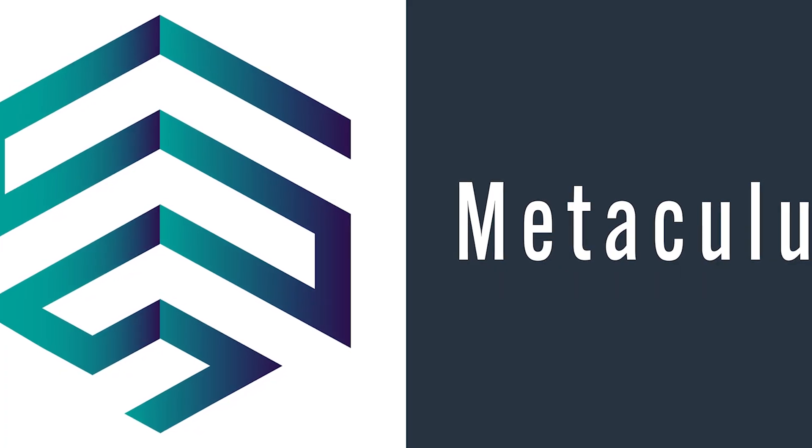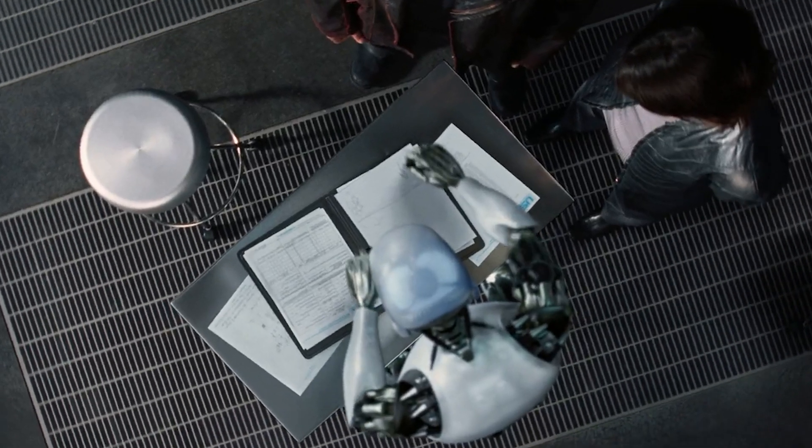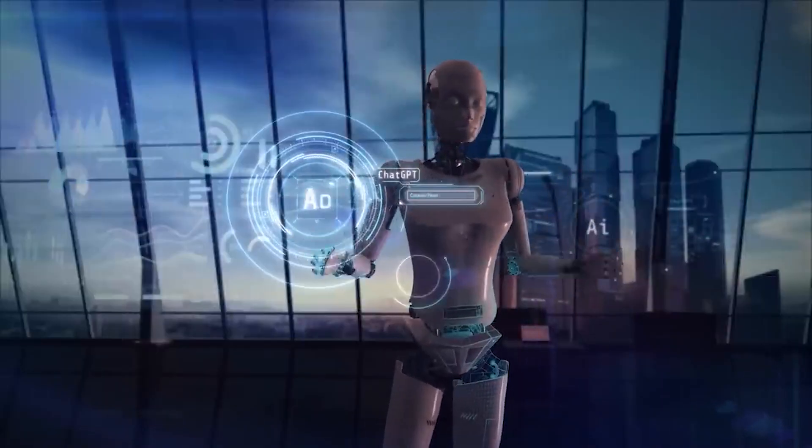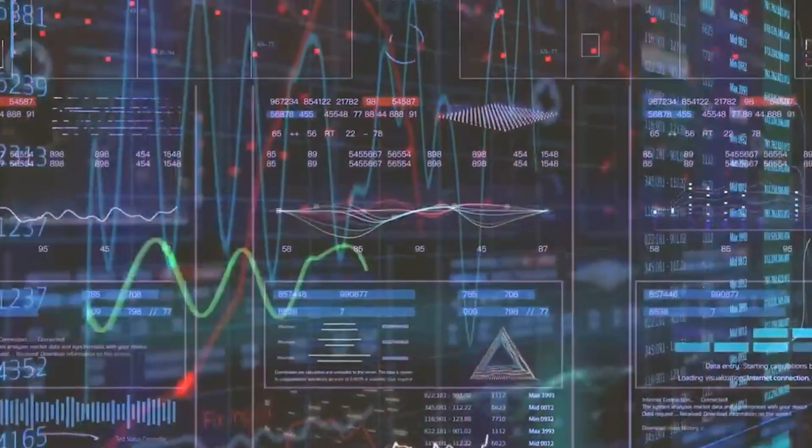According to predictions on a platform called Metaculus, AGI might be less than 10 years away. AI is different from human intelligence because it can grow very quickly once it reaches our level of smartness. Bostrom suggests that AI's real power is in being able to make itself even smarter, which could lead to a huge burst of intelligence.